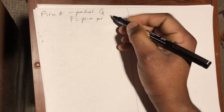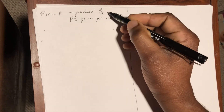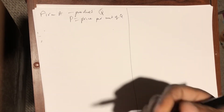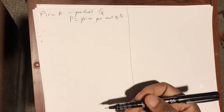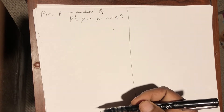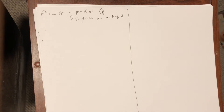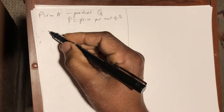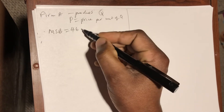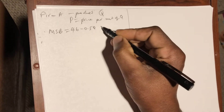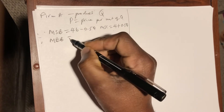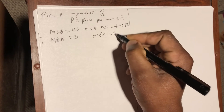Q represents the units of output produced monthly, and P is the price per unit of Q. We are given the following estimated equations: Marginal Social Benefit (MSB) = 46 − 0.5Q, Marginal Social Cost (MSC) = 4 + 0.5Q, Marginal Externality Benefit (MEB) = 0, and Marginal Externality Cost (MEC) = 0.3Q.